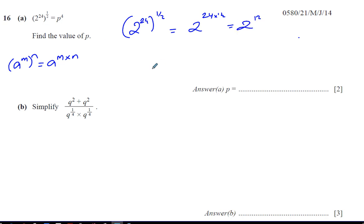So we now know that 2 to the power of 12 is equal to p to the power of 4. Now we have to find the value of p. For these two to be equal, the base on the left is 2 and the power on the right is 4. If I make the powers the same, then the bases will be the same, because these have to be equal to each other.